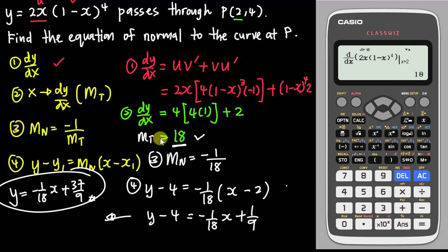You can use the calculator to double-check your gradient of tangent. For this type of question worth five to six marks, normally part A asks you to find dy/dx and part B asks for the equation of the normal or tangent. Using the calculator to confirm your gradient of tangent is correct is really useful to make sure you get full marks.